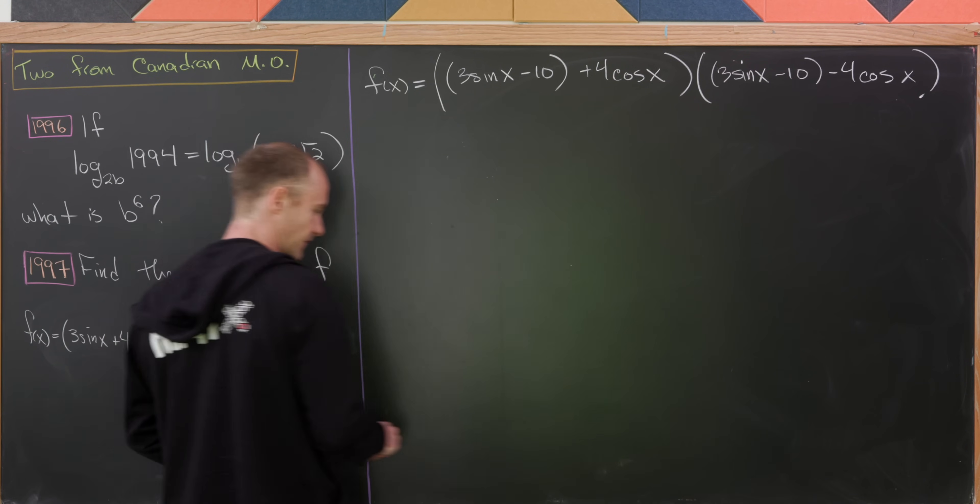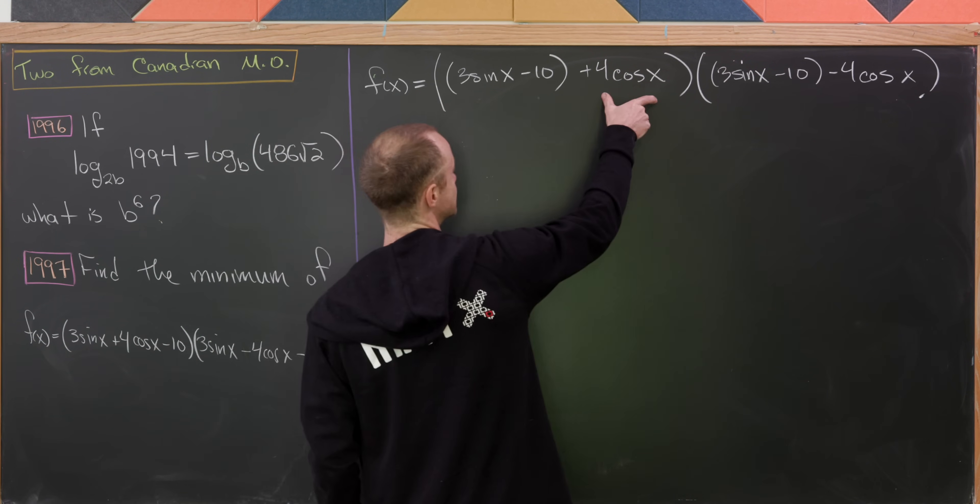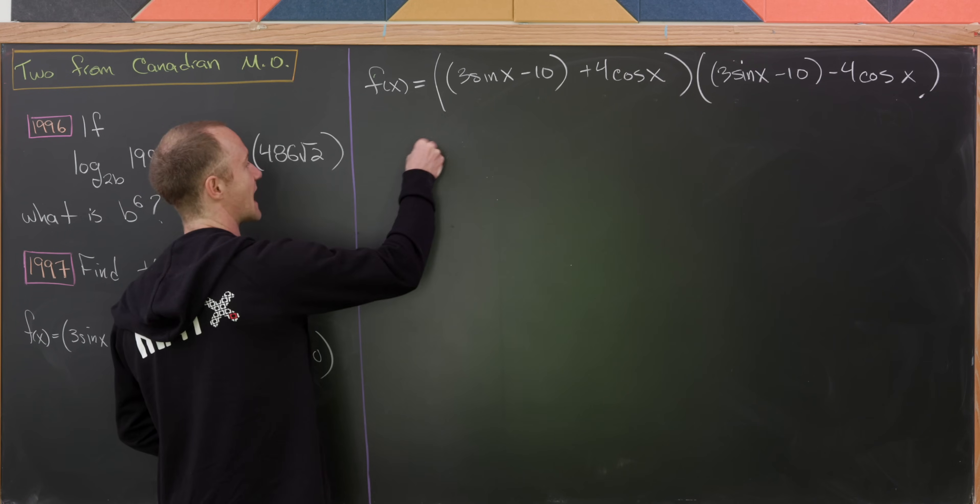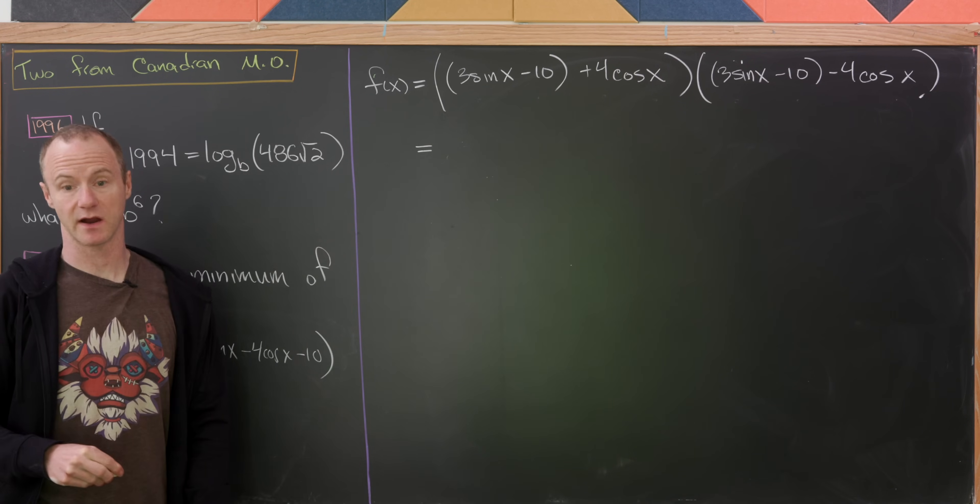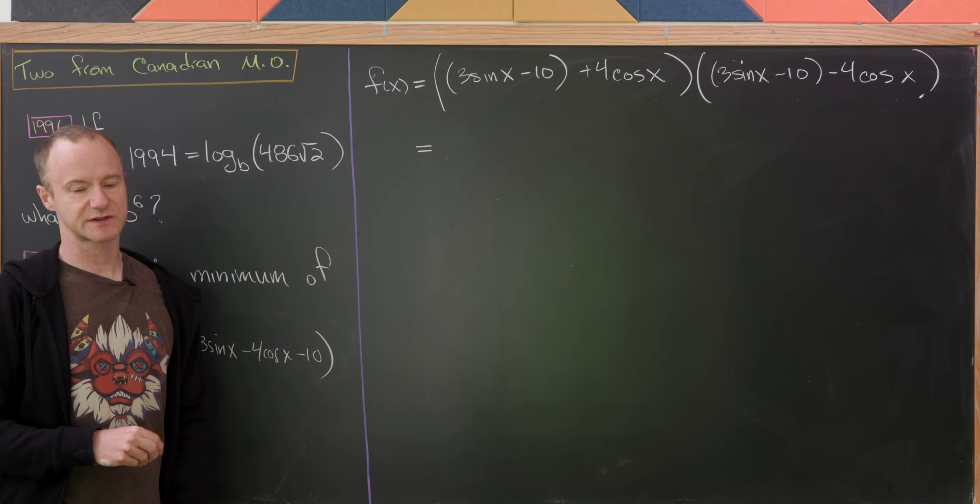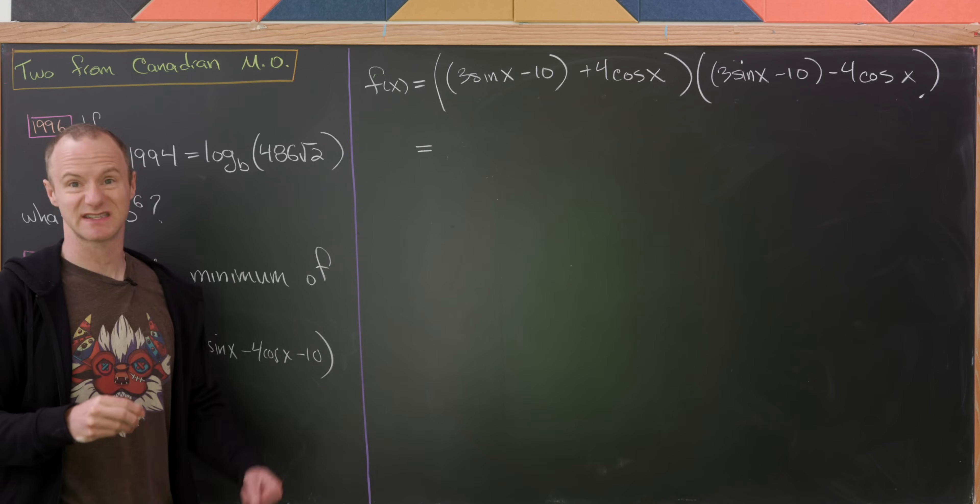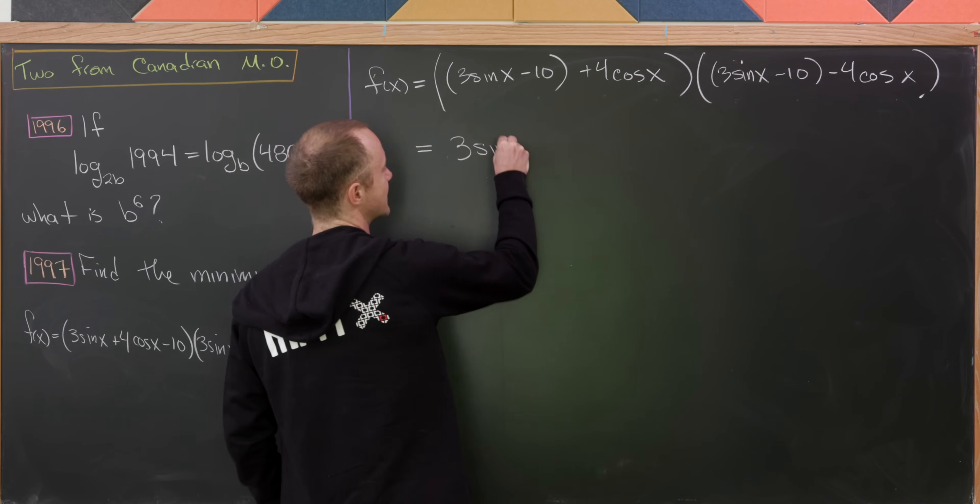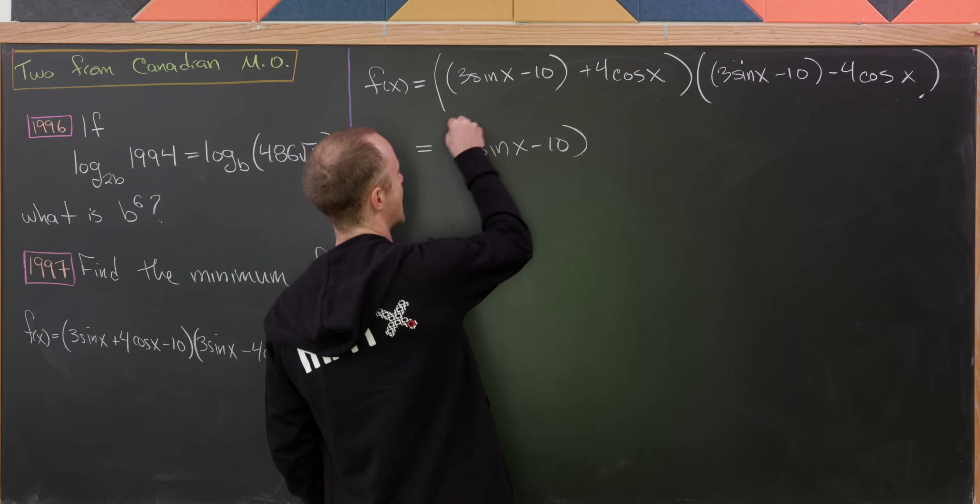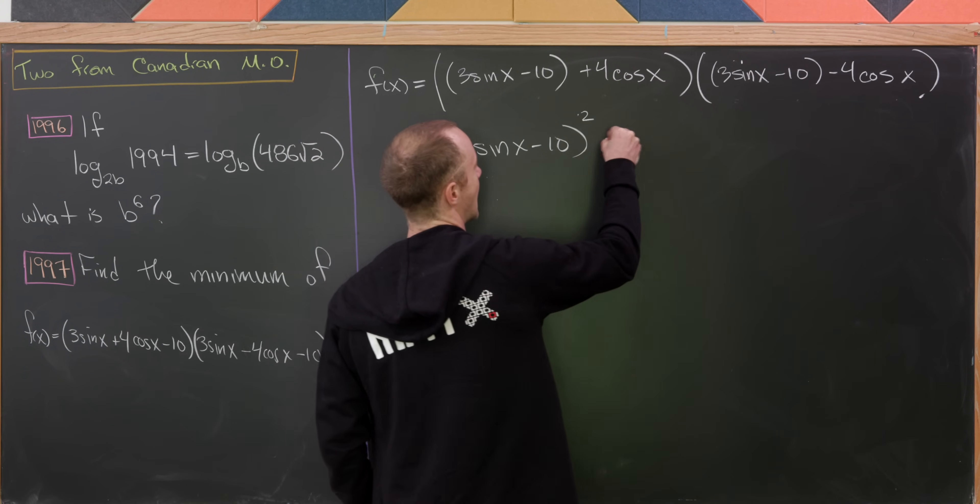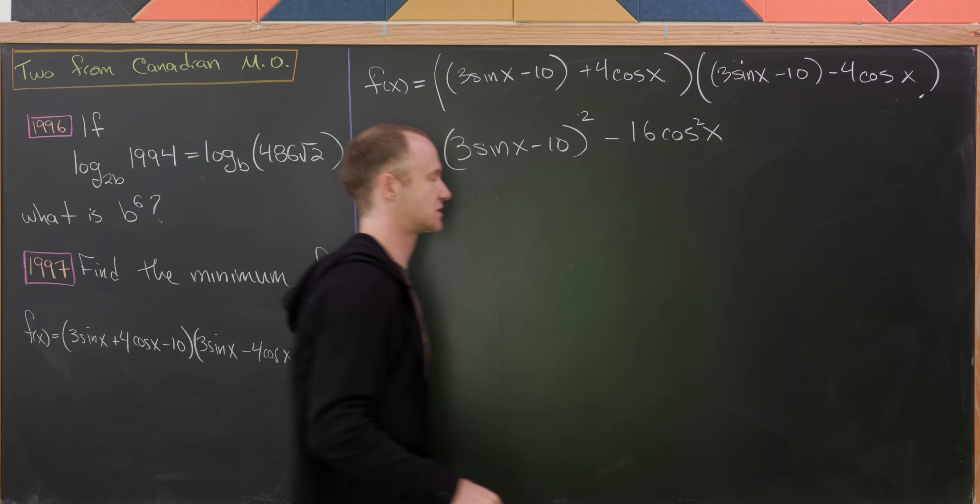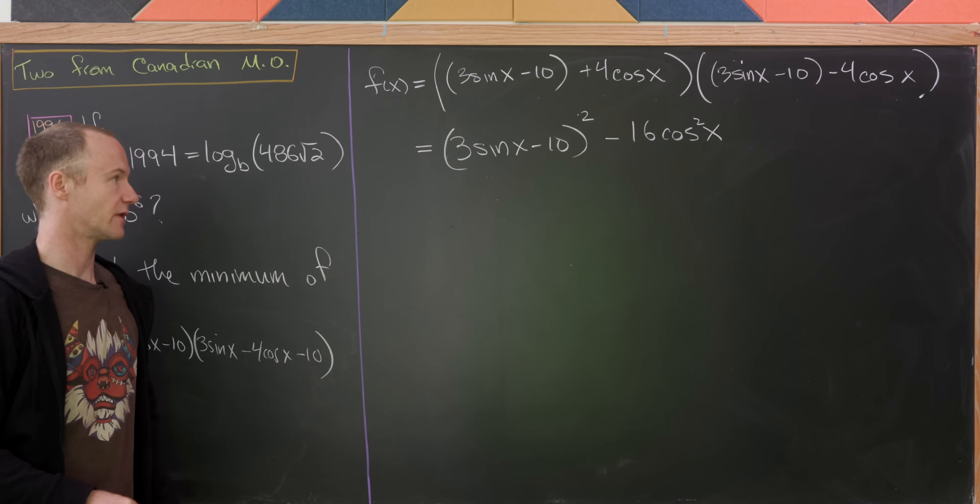So of course, when you multiply that out, you're going to get a difference of squares. And once we get a difference of squares, we can start simplifying it. So we're going to have 3 sine x minus 10 squared, and then minus 16 times cosine squared.